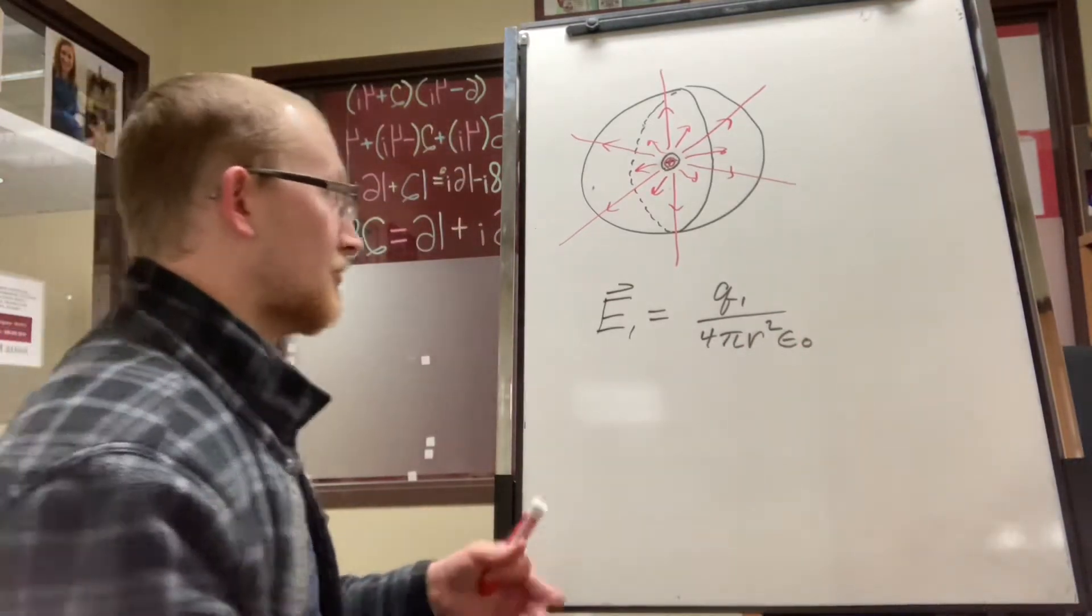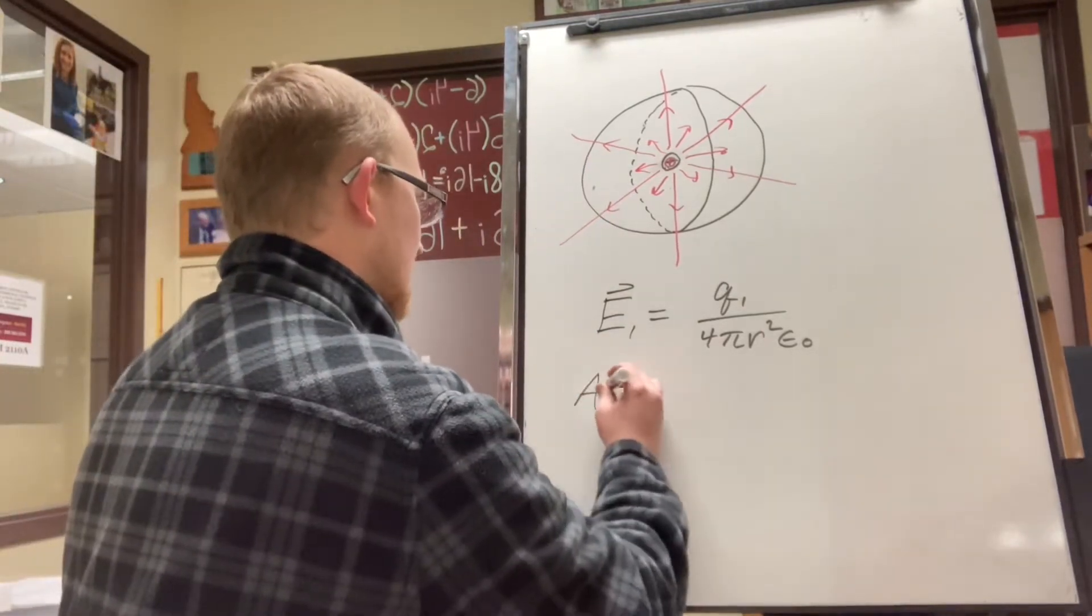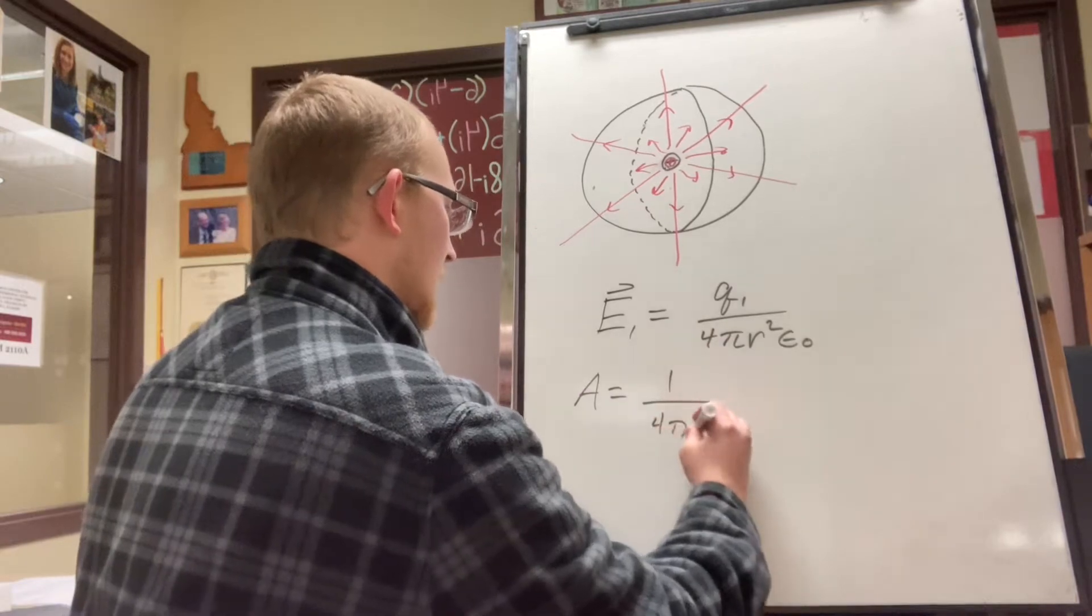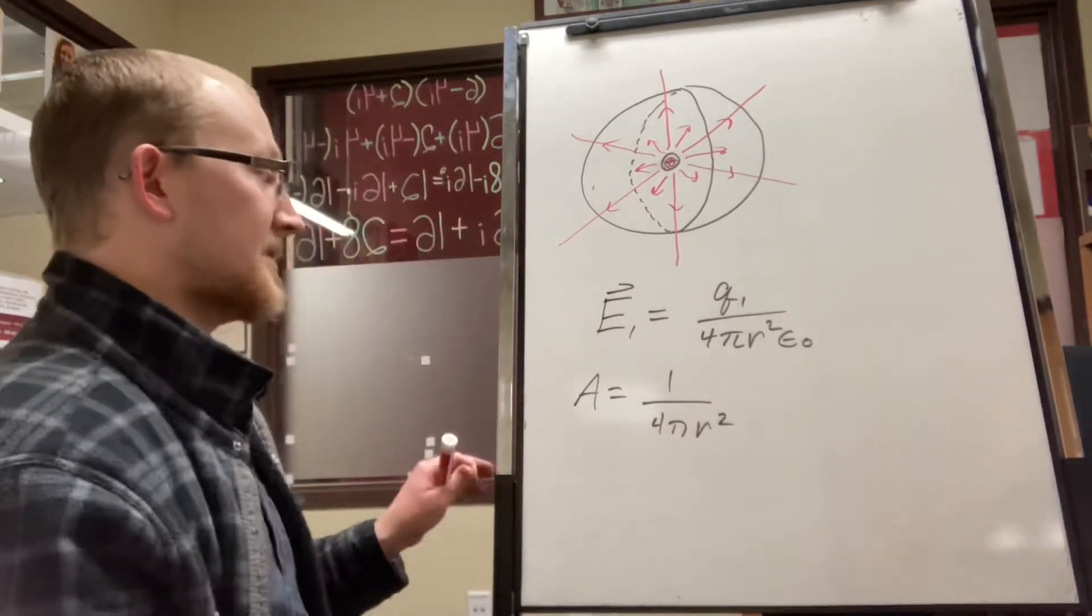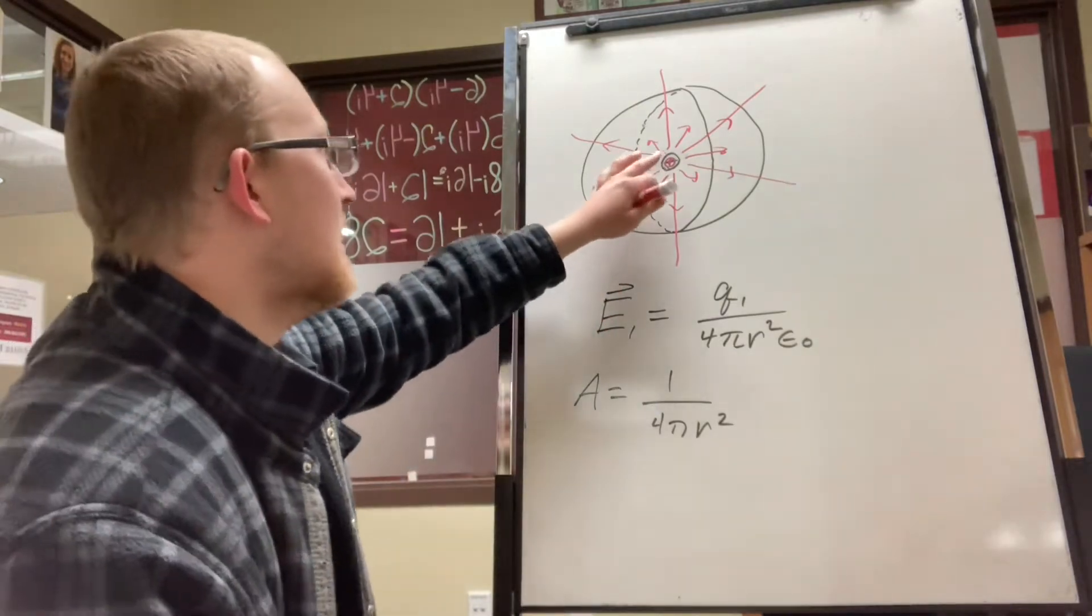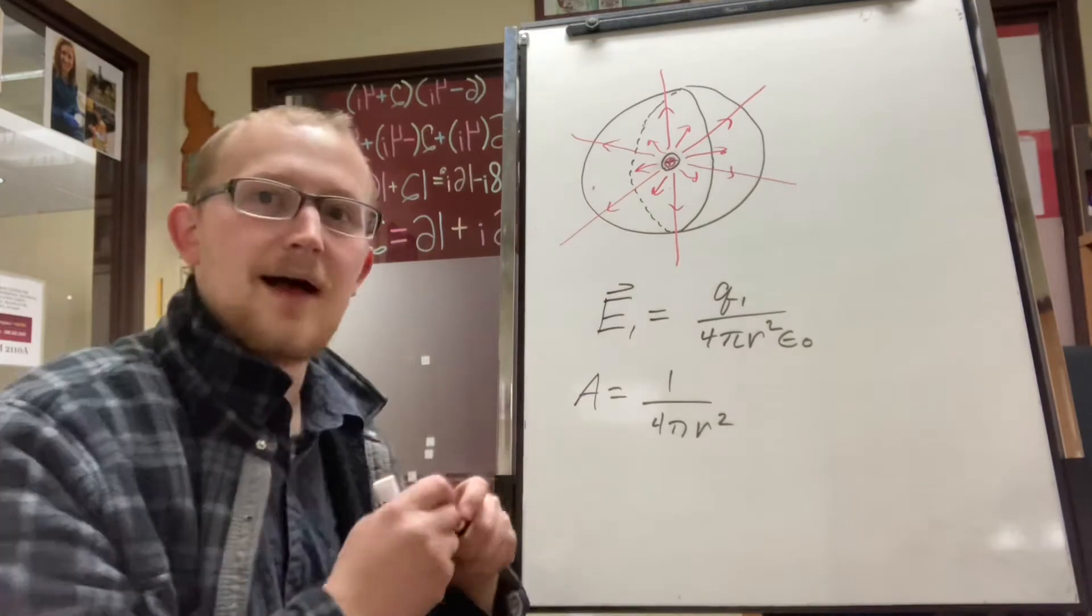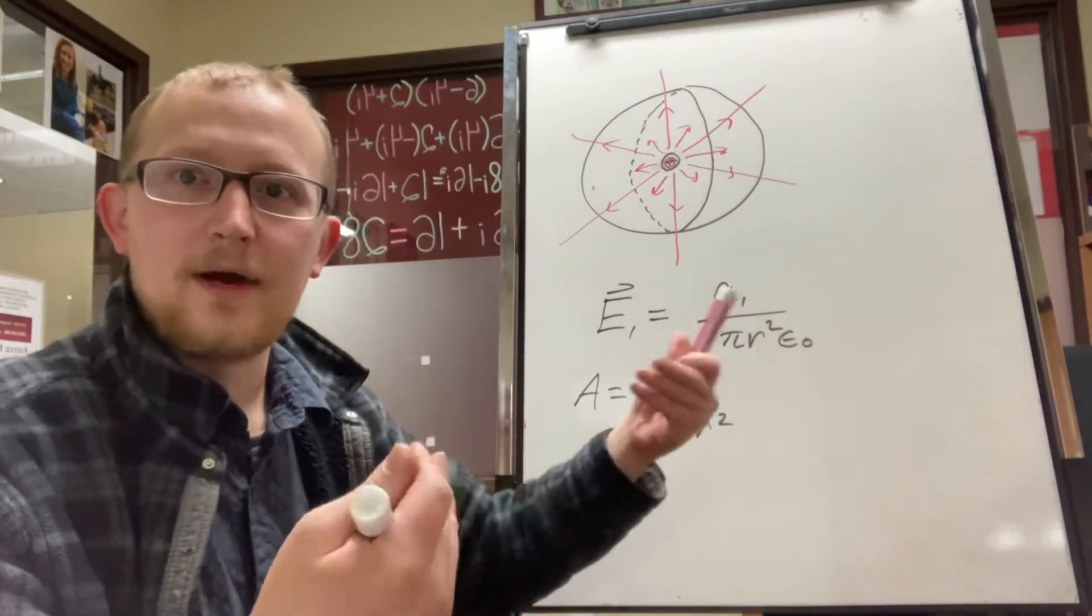And so if you'll recall, the surface area of a sphere, the area here is 4 pi r squared. And so that leaves us with the fixed number of lines. Lines don't reappear in space, they don't just show up. Lines can only point out of or into a charge.